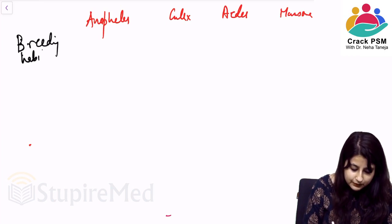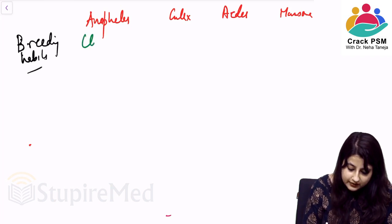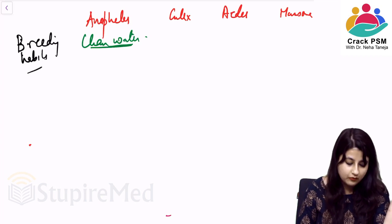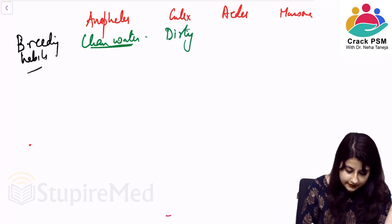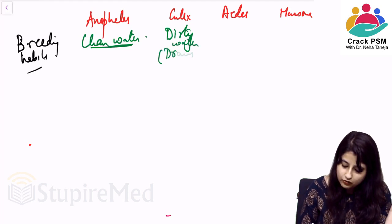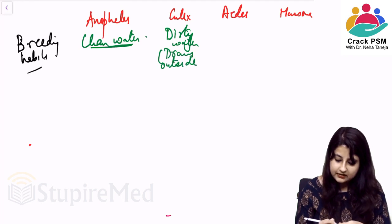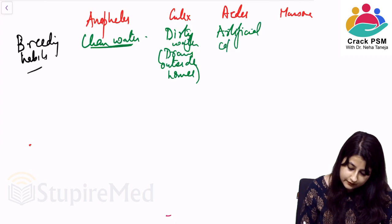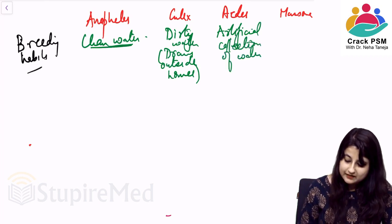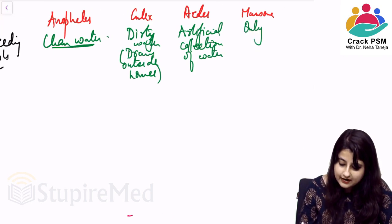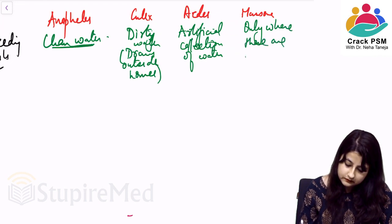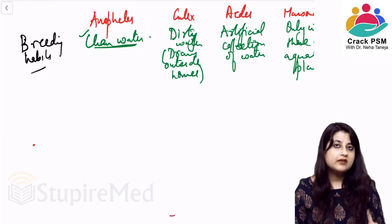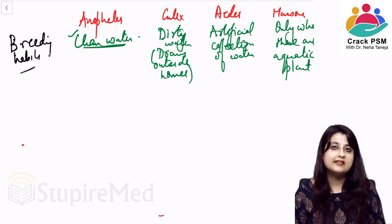Anopheles breeds in clean water — water tanks resting on top of houses, for example. Culex breeds in dirty water, meaning drains outside your home. Aedes breeds in artificial collections of water. Mansonia can breed only where there are aquatic plants. So: Anopheles — clean water; Culex — dirty water; Aedes — artificial collection of water; Mansonia — only where there are aquatic plants.